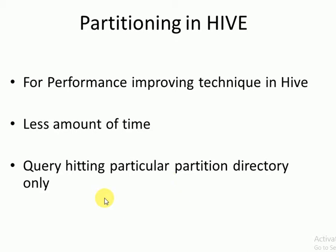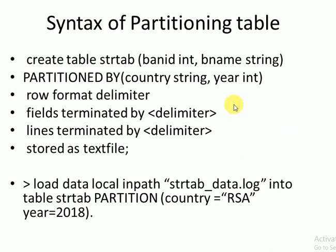Now let's look at the syntax for creating a partitioned table. We use CREATE TABLE with columns bank_id and bank_name as string. We then add the PARTITIONED BY clause, specifying country as string and year — these two are the partitioning elements. Then we define the row format with field and line delimiters.